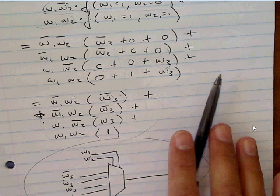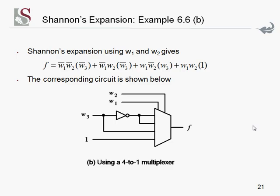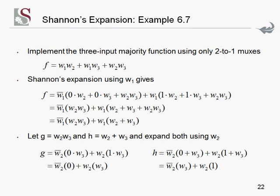Take note that the textbook didn't pay much attention to which select line bit is most significant versus least significant, so the textbook is a bit inconsistent there. The next example, which is also fairly crucial, is what to do when you end up with an OR gate in one of the multiplexer inputs and how to take that further.